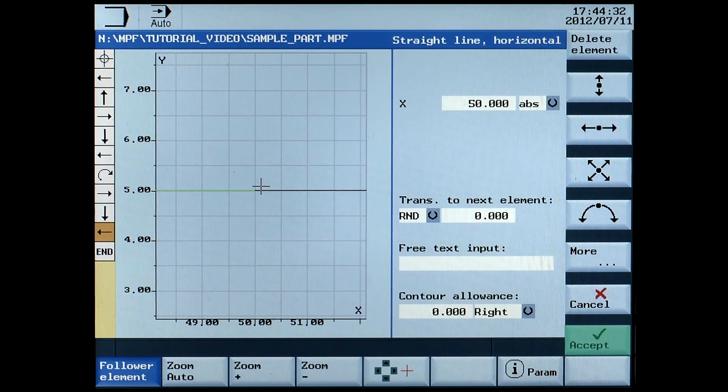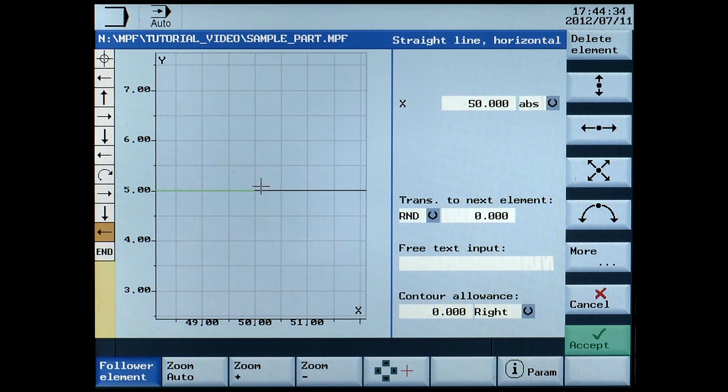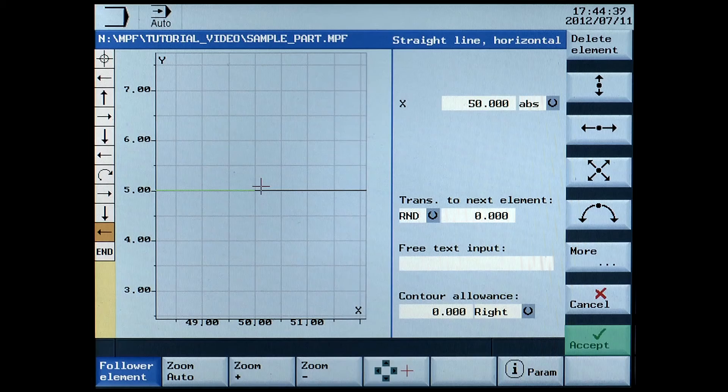After completing the contour, press the accept soft key and press the tech interface soft key to save the subroutine data and put the cursor back within the contour milling cycle.